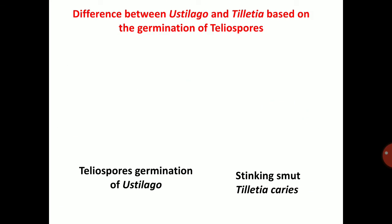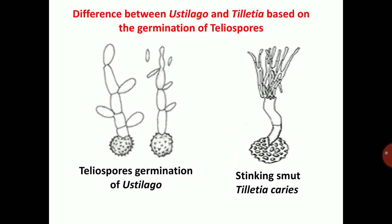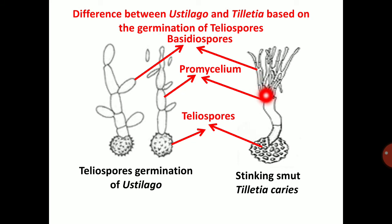Difference between Ustilago and Tilletia: the distinction is based on the germination of teliospores. Both produce promycelium and then basidiospores, but the difference is in position. In Ustilago, lateral basidiospores are present on the promycelium. In the case of Tilletia caries, it will produce terminal basidiospores. Terminal basidiospores are present in Tilletia, whereas lateral basidiospores are present in Ustilago. This is the main difference between Ustilago and Tilletia.